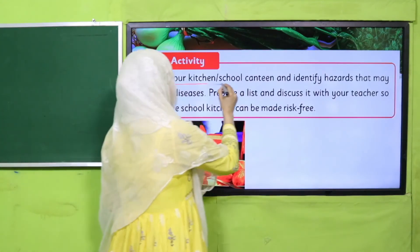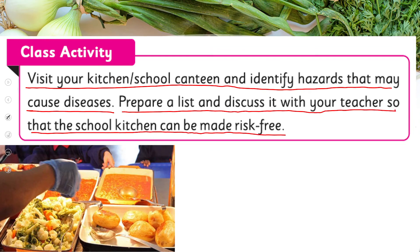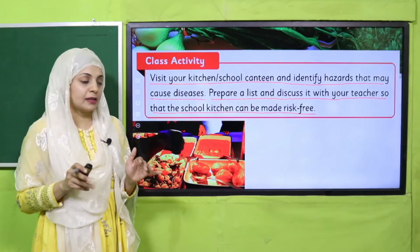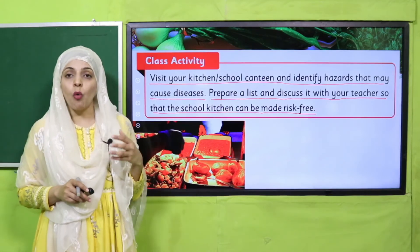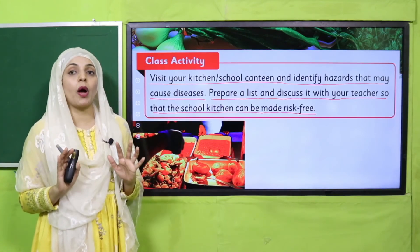Activity: visit your kitchen or school canteen and identify hazards that may cause diseases. Prepare a list and discuss it with your teacher so that the canteen or kitchen can be made risk-free. Note down any unhealthy items — like open food, or food being handled with dirty hands — and report them to your parents or teachers so these hazards can be removed.